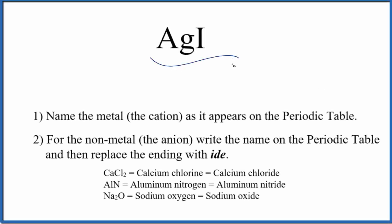Let's write the name for AgI. So the first thing you'll note, you have a metal here, the silver, and then a nonmetal. So we're going to treat this as an ionic compound when we write the name.